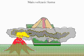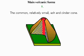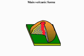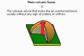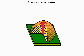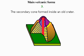This hill can take a variety of forms: the common, relatively small, ash and cinder cone; the volcanic dome that looks like an overturned bowl, usually without any signs of craters or orifices; and the secondary cone formed inside an old crater.